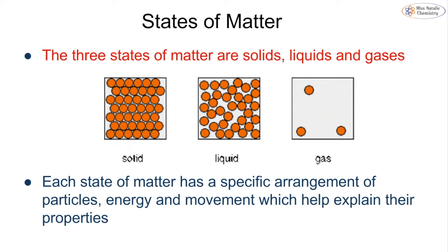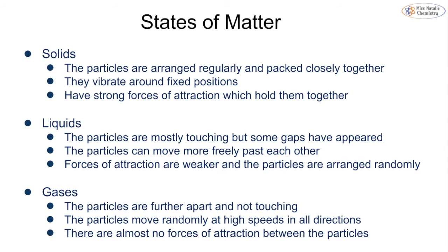There are three states of matter — you will have learned this back in key stage 3, most likely in year 7. We have solids, liquids, and gases, and each state of matter has a specific arrangement of particles, a specific energy, and movement, which helps explain their properties. In a solid, all particles are packed tightly into one space, all touching each other. In a liquid, they have a little bit more space to move around, whereas in a gas there is lots of space between the particles.